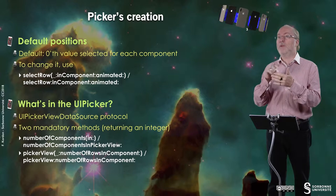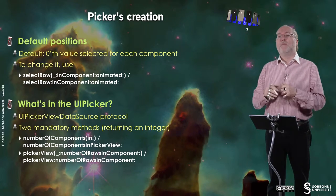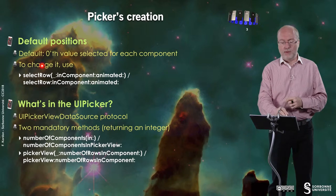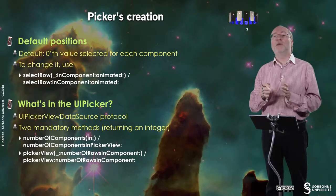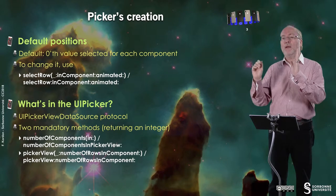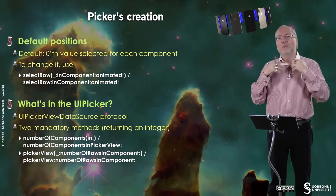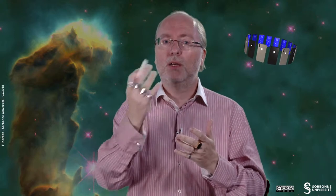You can change the default position using the method `selectRow:inComponent:`. This allows you to change the selected value not only when you set up the picker, but at any time — it programmatically sets the value of a given row in a given component.